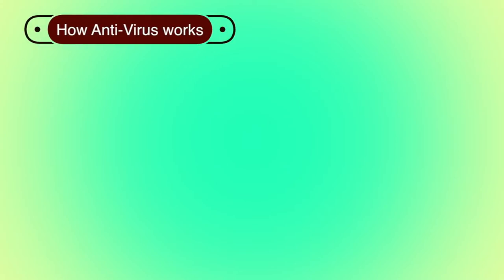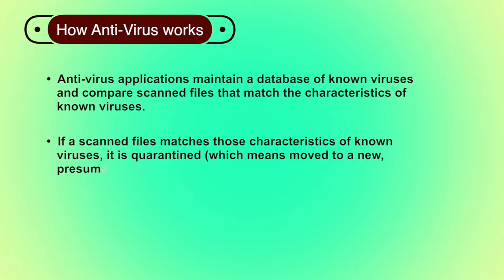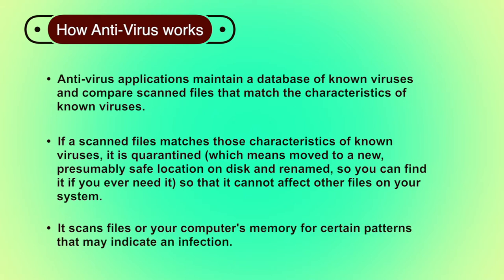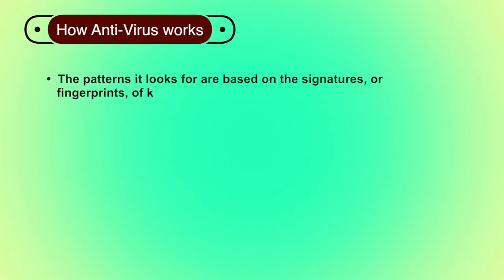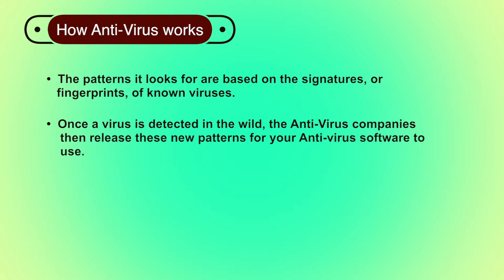Working of antivirus: antivirus applications maintain a database of known viruses and compare scanned files against the characteristics of known viruses. If a scanned file matches those characteristics, it is quarantined — moved to a new, presumably safe location on disk and renamed — so that it cannot affect other files. Antivirus scans files in your computer's memory for patterns based on the signatures or fingerprints of known viruses. Once a virus is detected in the wild, antivirus companies release new patterns for your software to use. These updates come out daily from some vendors.